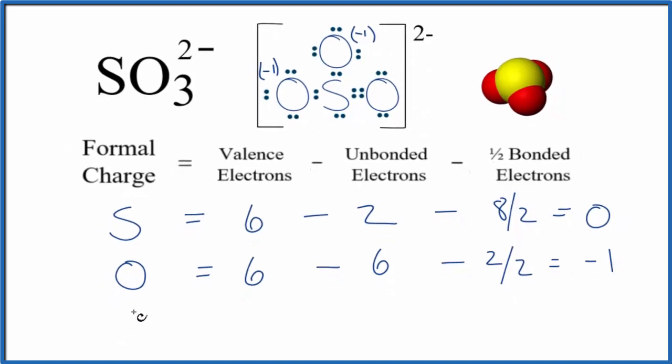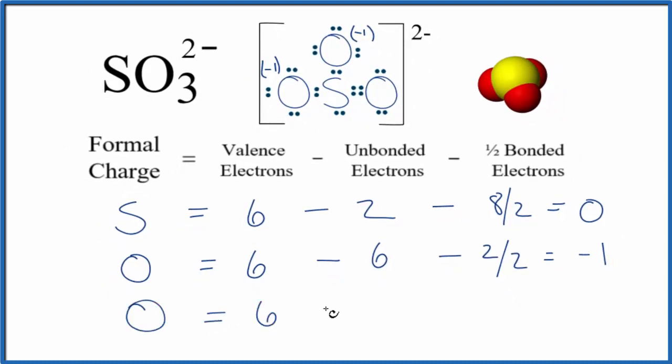Let's do the oxygen with the double bond. Oxygen, that's going to be six because it's oxygen. And then we're looking at unbonded: two, four. So four unbonded. And then the bonded, we have the double bond here, so two, four.